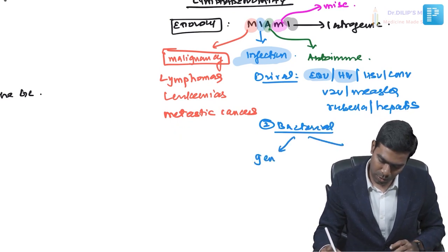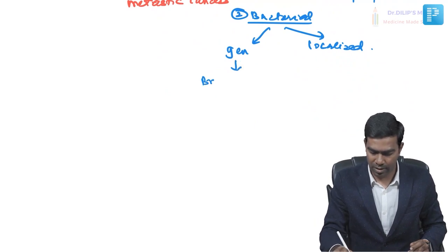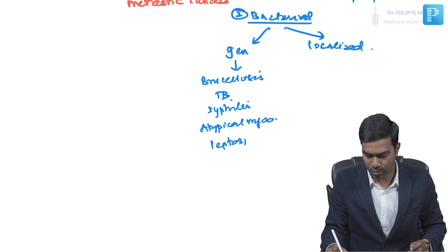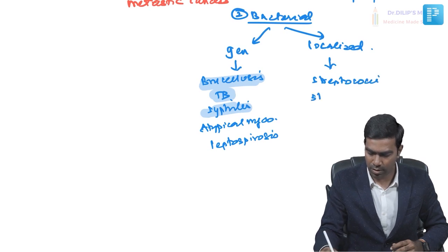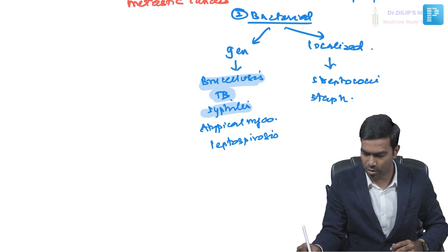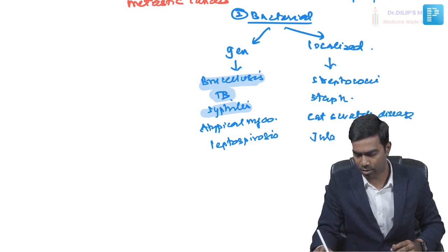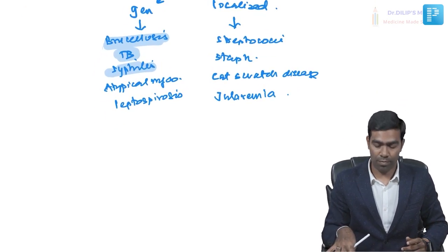Second, bacterial infections — split into generalized and localized lymphadenopathy. Generalized lymphadenopathy with bacterial infections points toward brucellosis, tuberculosis, syphilis, atypical mycobacteria, and rarely leptospirosis. Localized bacterial lymphadenopathy is very commonly seen in pharyngitis, streptococcal sore throat, staphylococcal infections, cat scratch disease, and Francisella tularensis causing tularemia.